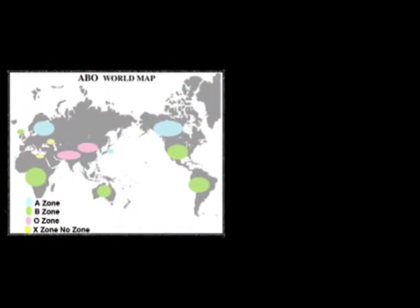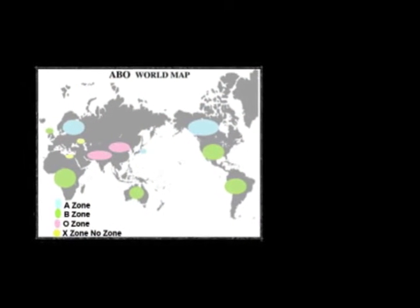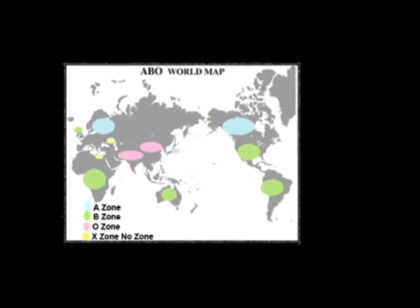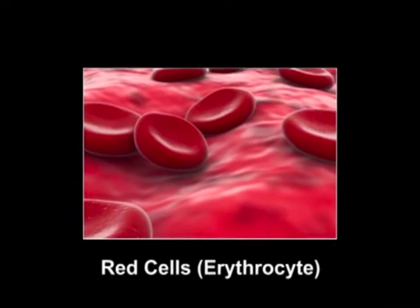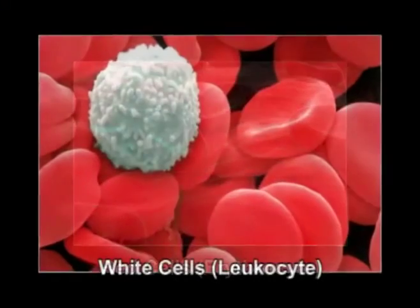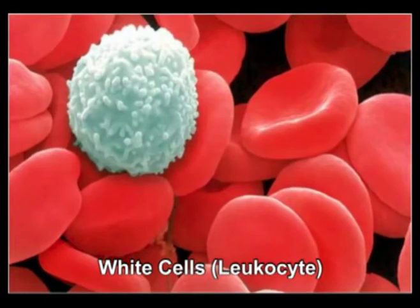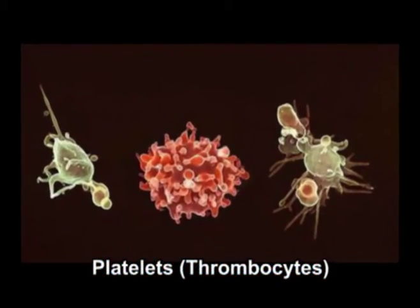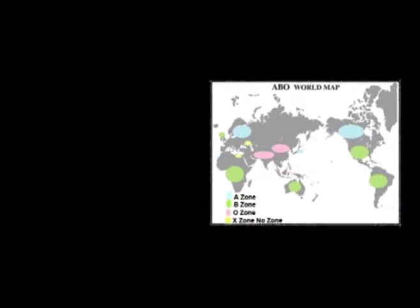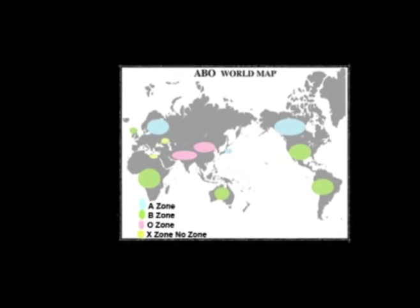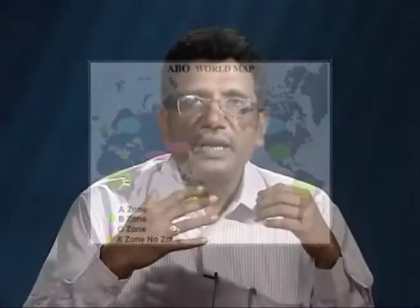Normally, seven to eight percent of the human body weight is from the blood. Blood is a highly specialized tissue composed of more than 4,000 different kinds of components. Four of the most important ones are red cells (technically known as erythrocytes), white cells (leukocytes), platelets (thrombocytes), and plasma. Blood is circulated around the body through blood vessels by the pumping action of the heart.